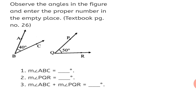Now observe the angles in the figure and enter the proper number in the empty box. You can see this activity in the textbook on page number 26. We have two angles here. The measure of Angle ABC is equal to 40 degrees, and the measure of Angle PQR is equal to 50 degrees.